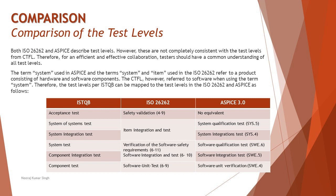For system test, ISO 26262 has verification of software safety requirements under volumes 6 to 11, and for component integration test, software integration and test. In ASPICE, the equivalent is the software qualification test under SWE.6 and software integration test under SWE.5. For component testing, ISO 26262 has the software unit test in volumes 6 to 9, and ASPICE has software unit verification under SWE.4.